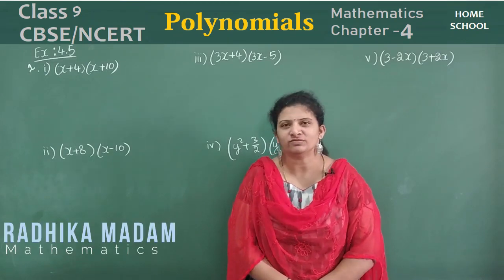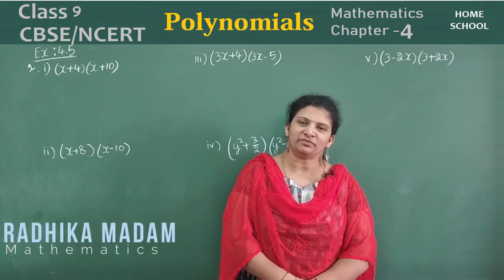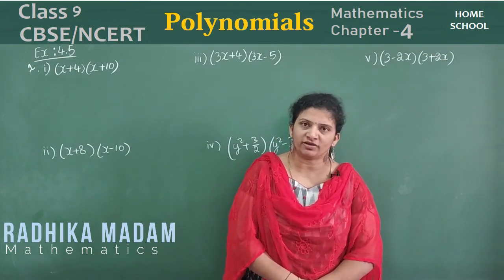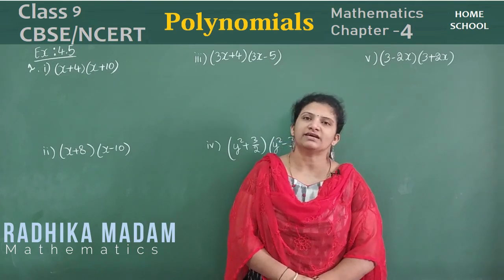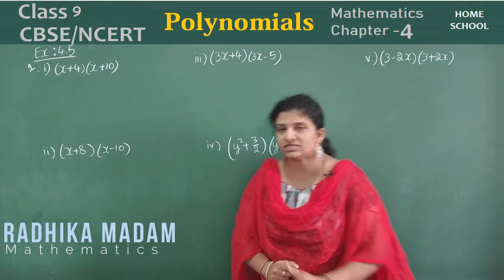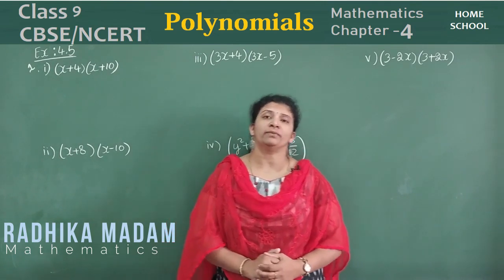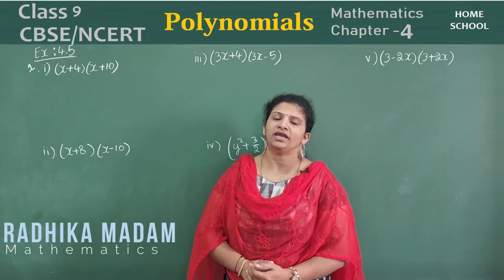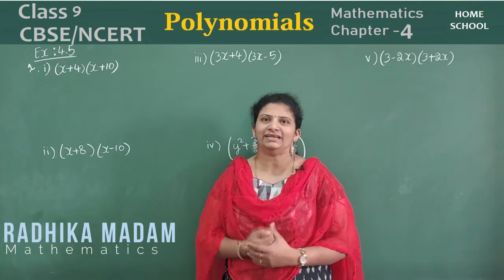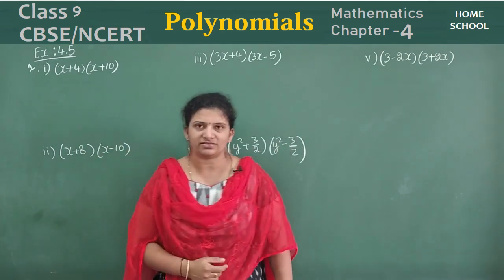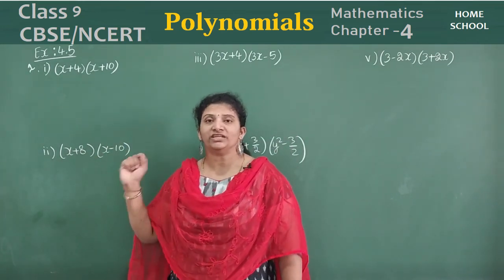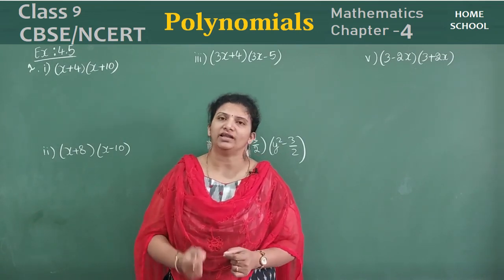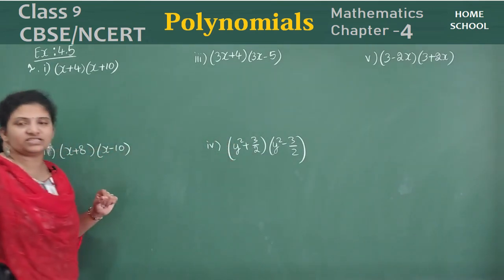Hi, hello! Welcome to your home school. This is your Class 9 Mathematics NCERT or CBSE board. We are in Chapter 4, Polynomials, and your last exercise, Exercise 4.5. The first main objective is using suitable identities to find the product. Normally if there's no specific instruction we can directly multiply, but this question asks us to apply the identity and find the product.